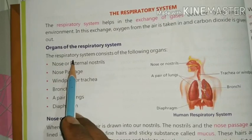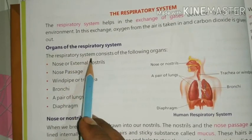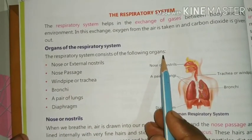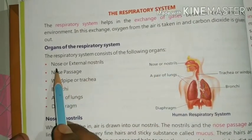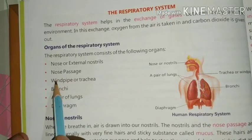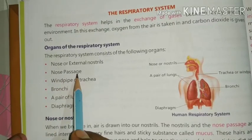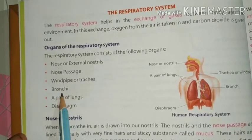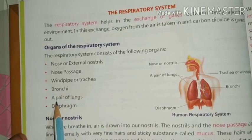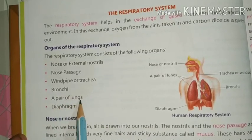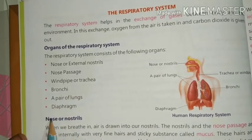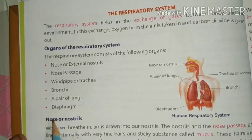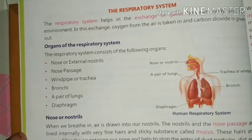The respiratory system consists of the following organs: nose, nose passages, windpipe, bronchi, a pair of lungs, and diaphragm.